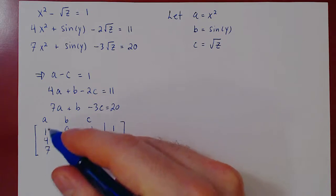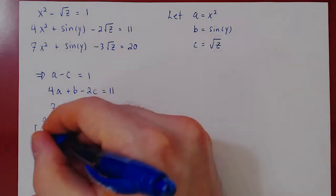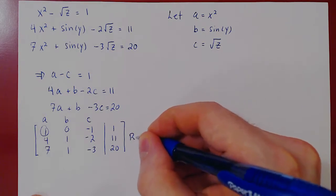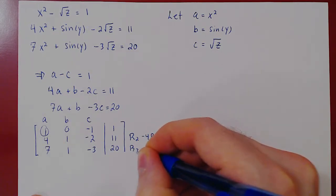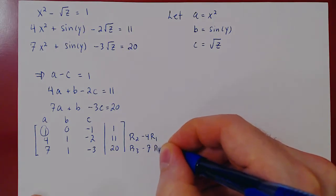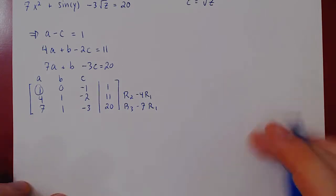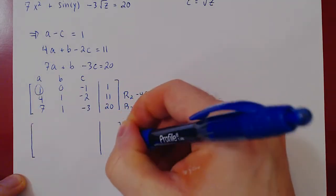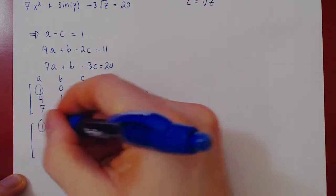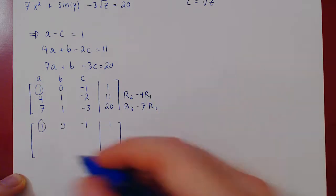We already have leading 1 in the leftmost column and top row, so we can use it to kill the entries below. Row 2 minus 4 of row 1. Row 3 minus 7 of row 1. We can recopy row 1 as we're not changing it.